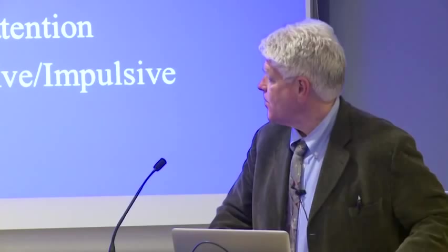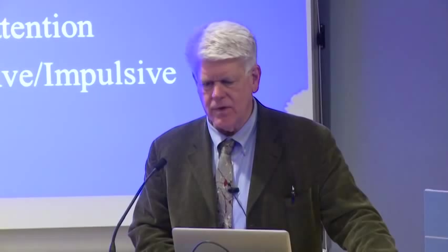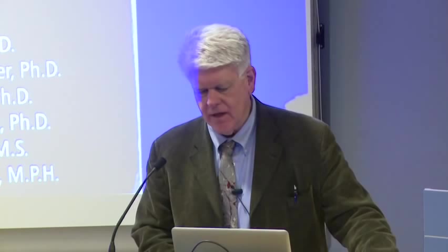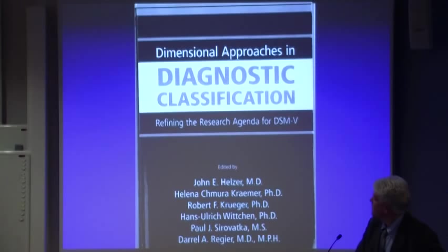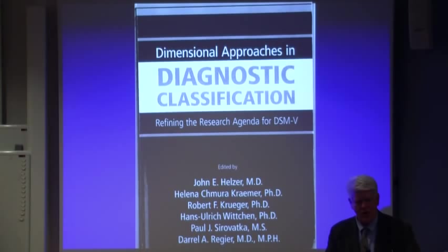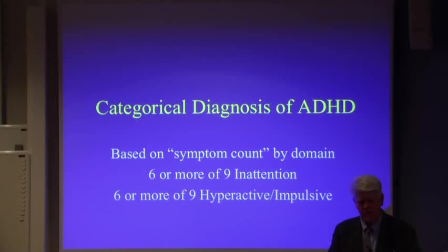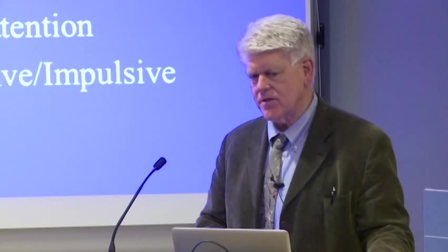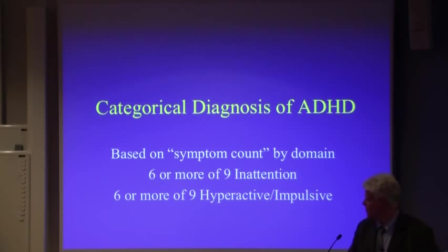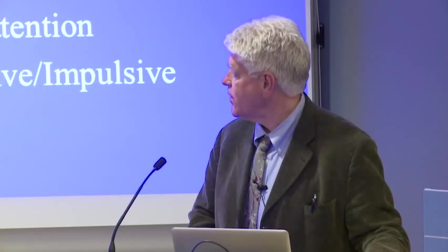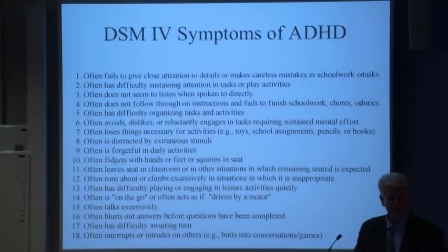The categorical system is what is in place now in both DSM-4 and ICD-10. The dimensional approaches listed in that book are proposed as an alternative to categorical diagnosis. The categorical diagnosis is just a symptom count — if you meet the criteria set by DSM-4, it's a count of six or more symptoms of inattention and six or more symptoms of hyperactive impulsivity.